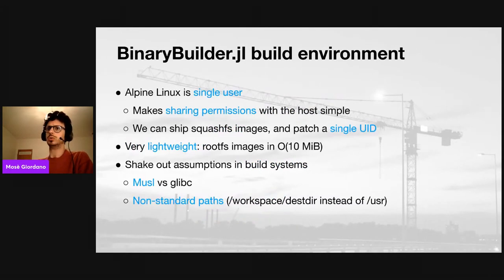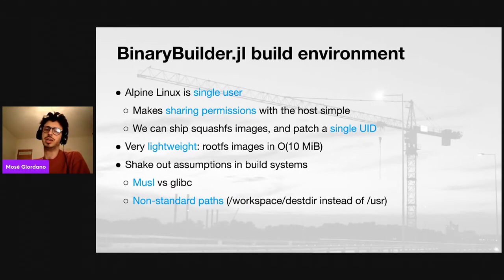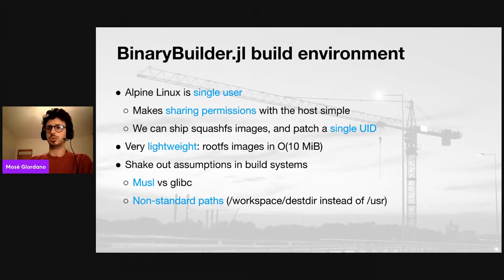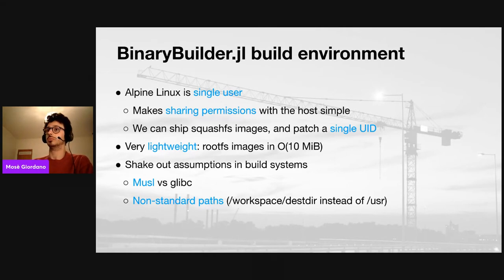We use Alpine Linux as a base image because it's a single-user system, which makes sharing permissions with the host very simple. We can also ship SquashFS images and patch only a single UID, which is very important when creating tarballs. Alpine Linux is very lightweight — the root filesystem image is less than three megabytes. It also allows us to catch some assumptions in build systems that assume glibc. Instead, if you use a different host, we can check those assumptions. And in the build system, we use a very non-standard path — like instead of /usr as prefix, we use the directory /workspace — another way to break assumptions in build systems.